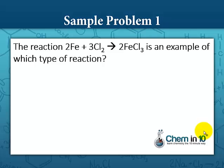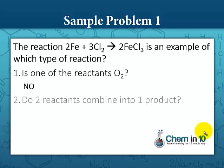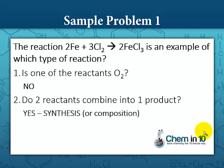Sample problem number one: the reaction 2 Fe + 3 Cl₂ gas yields 2 FeCl₃ is an example of what type of reaction? Going through our flowchart: is one of the reactants oxygen? No. Do two reactants combine into one product? Yes. So this is a synthesis reaction.